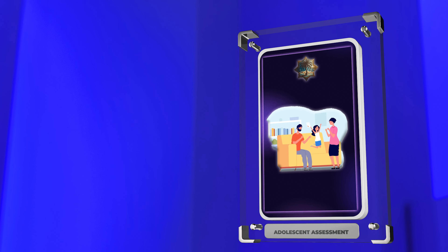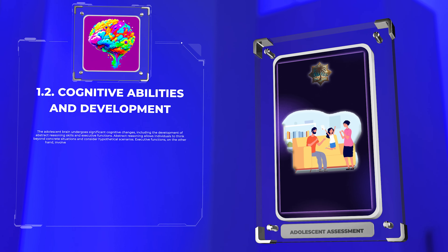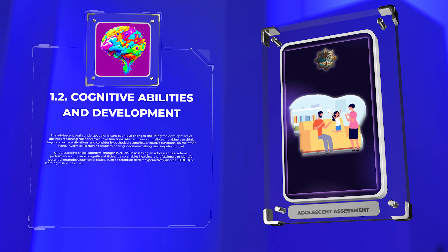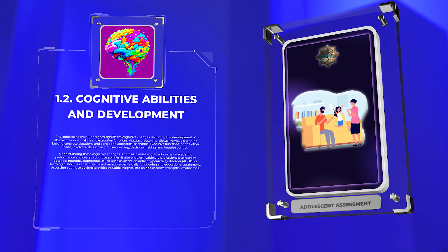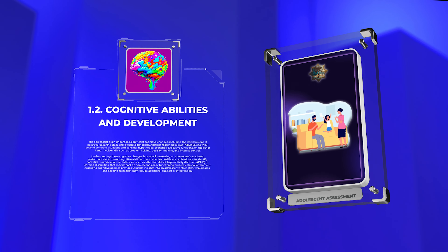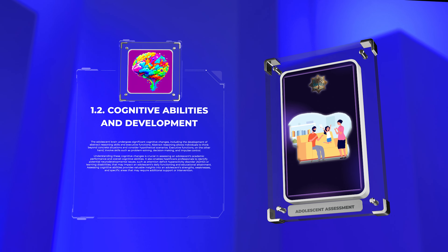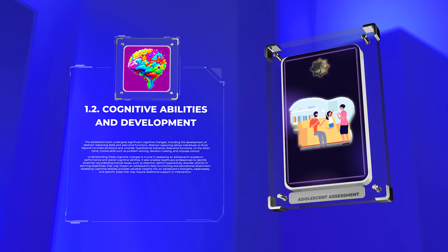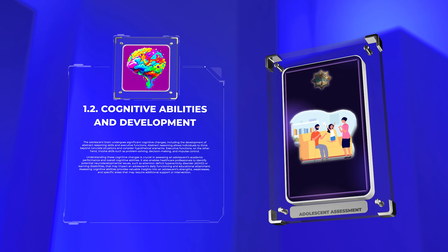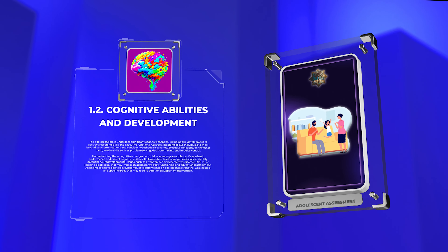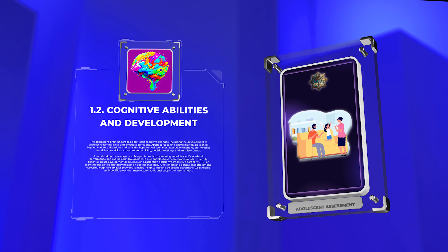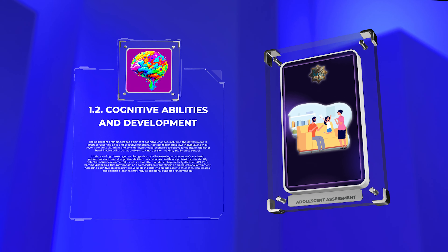The adolescent brain undergoes significant cognitive changes, including the development of abstract reasoning skills and executive functions. Abstract reasoning allows individuals to think beyond concrete situations and consider hypothetical scenarios. Executive functions involve skills such as problem solving, decision-making, and impulse control. Understanding these cognitive changes is crucial in assessing an adolescent's academic performance and overall cognitive abilities.